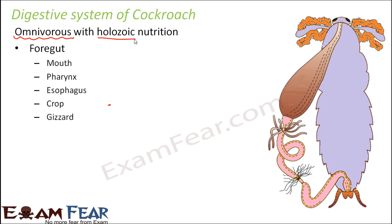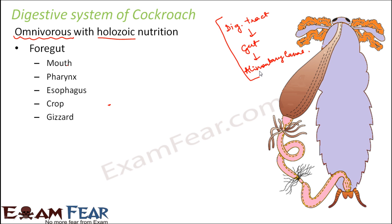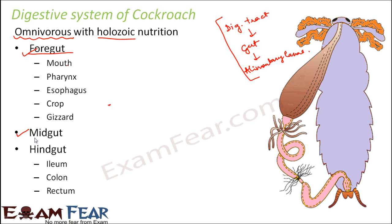The digestive system is broadly classified into three parts. When we talk about the digestive system, we are essentially talking about the digestive tract, also known as the gut or alimentary canal. In the case of cockroach, the entire digestive tract is divided into three parts: foregut, midgut, and hindgut.